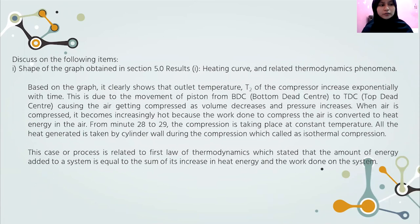For discussion, question one asks us to discuss the shape of the graph obtained — the heating curve and related thermodynamic phenomena. Based on the graph, it clearly shows that outlet temperature T2 of the compressor increased exponentially with time. This is due to the movement of the piston from BDC to TDC, causing the air to be compressed as volume decreases and pressure increases. When air is compressed, it becomes increasingly hot because the work done to compress the air is converted to heat energy. From minute 28 to 29, compression takes place at constant temperature — all heat generated is taken by the cylinder wall during compression, which is called isothermal compression. This is related to the first law of thermodynamics, which states that energy added to a system equals the sum of its increase in heat energy and the work done on the system.